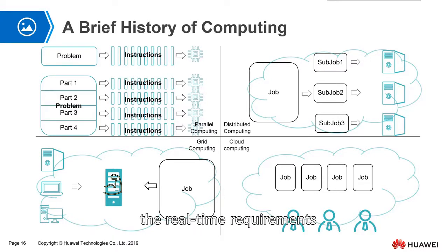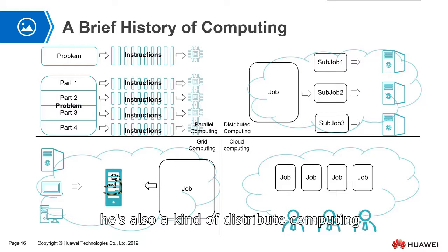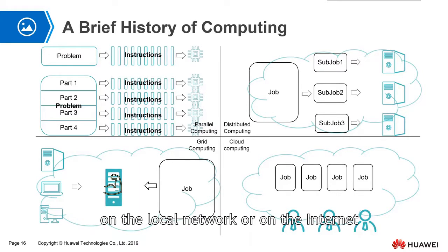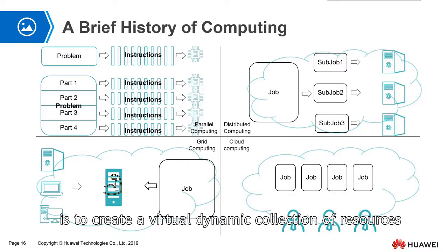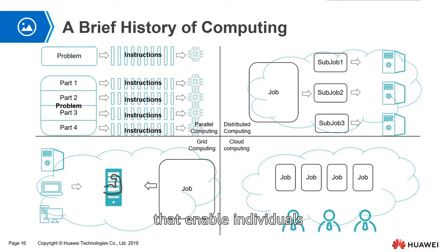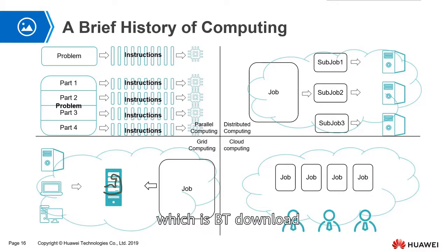Therefore, the real-time requirements of distributed computing are not high, and it has low tolerance for computational errors. Grid computing is the use of a wide range of scattered computing resources to accomplish a common task. It is also a kind of distributed computing. According to IBM's definition, it aggregates available computing resources on the local network or on the Internet, making end users or applications feel that they are using a powerful virtual computer. The most common application in our daily life that belongs to grid computing is BT Download. That is, while you are downloading, you are also providing resources to others.